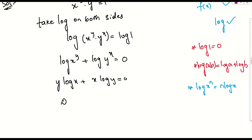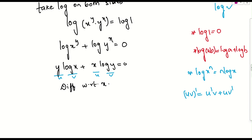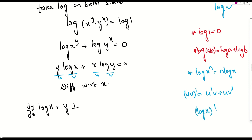Now we differentiate this with respect to x. Looking at this expression, both terms are in the form of a product u times v. The product rule gives u'v plus uv'. So for the first term, the derivative gives dy/dx times log x plus y times 1 by x.